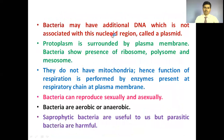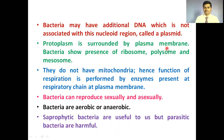Along with the main bacterial DNA, bacteria also show one additional circular double-stranded DNA called a plasmid. The plasmid is extra-chromosomal, autonomously self-replicating DNA. The protoplasm is surrounded by the plasma membrane, also called the selectively permeable membrane or cell membrane, which surrounds the protoplasm of the bacterial cell.